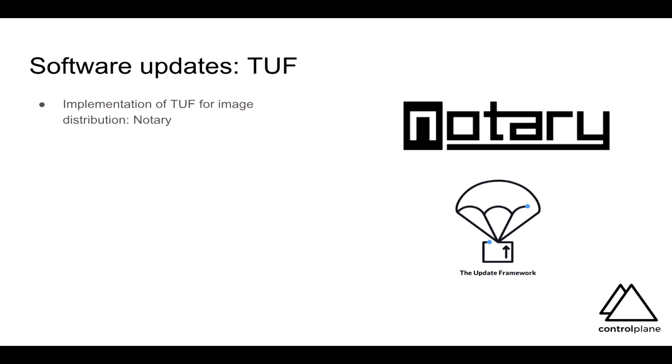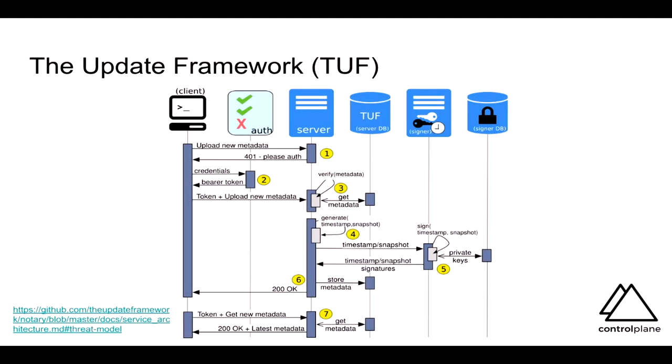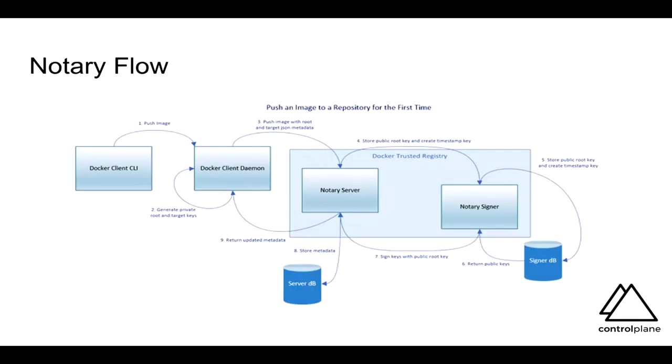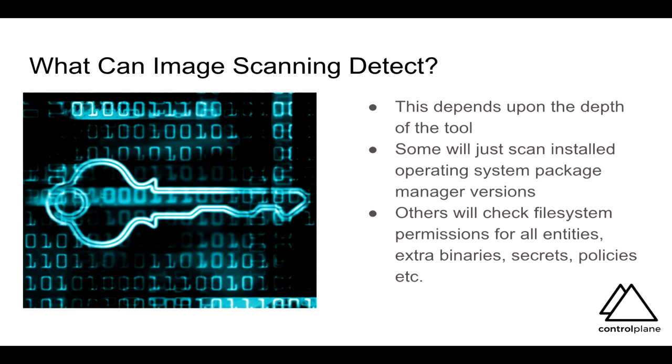Best practice is to store the master key offline — this is very similar to GPG. Transparent key rotation is another feature. It's kind of an interesting one because if your organization is breached, perhaps you should admit that publicly. This is broadly how the Update Framework works. The Notary flow essentially puts a Notary server inside the trusted registry, and then we validate that the signed key is the correct one when we use that image. This can be enabled with content trust via the environment variable on the command line.